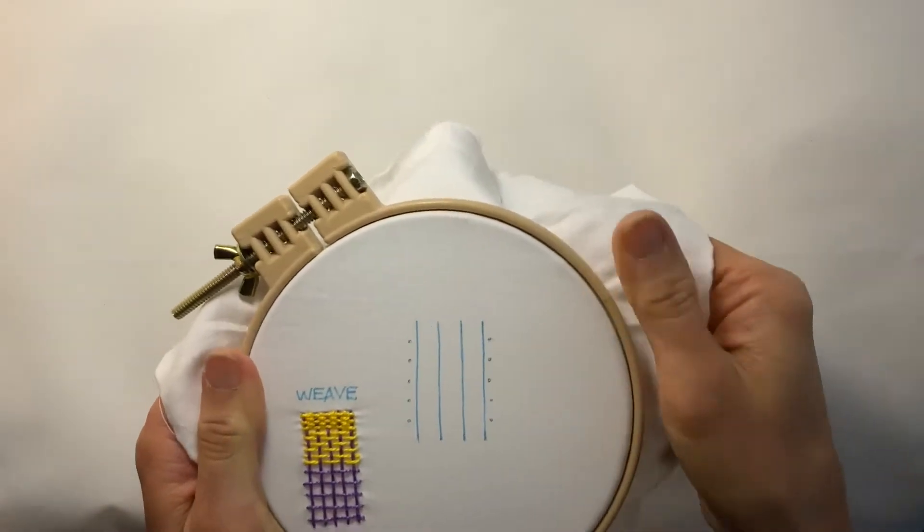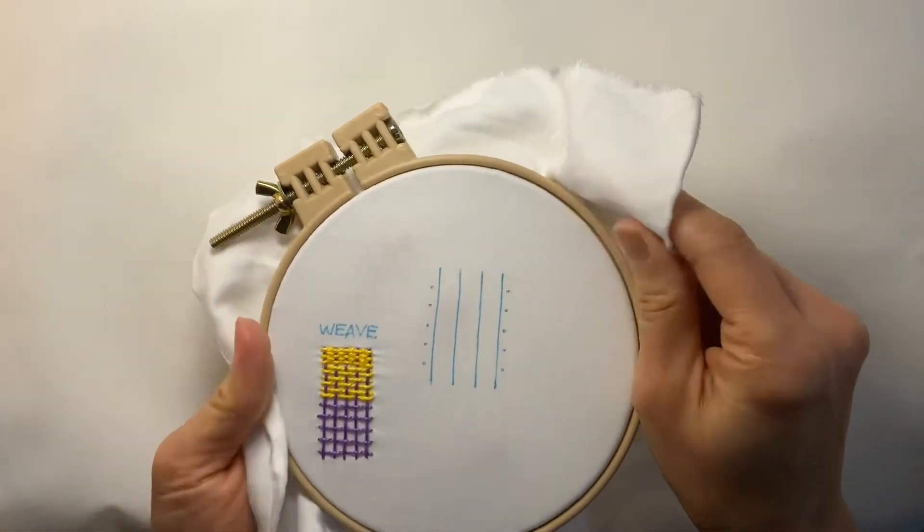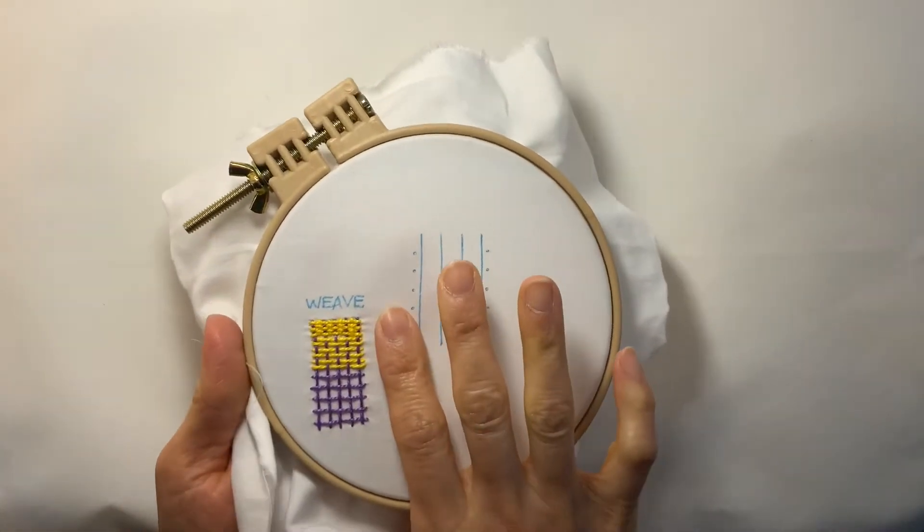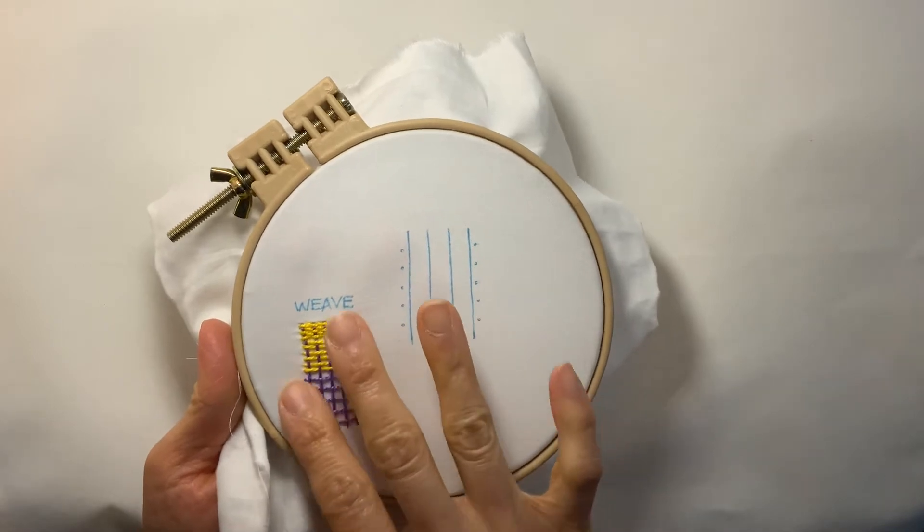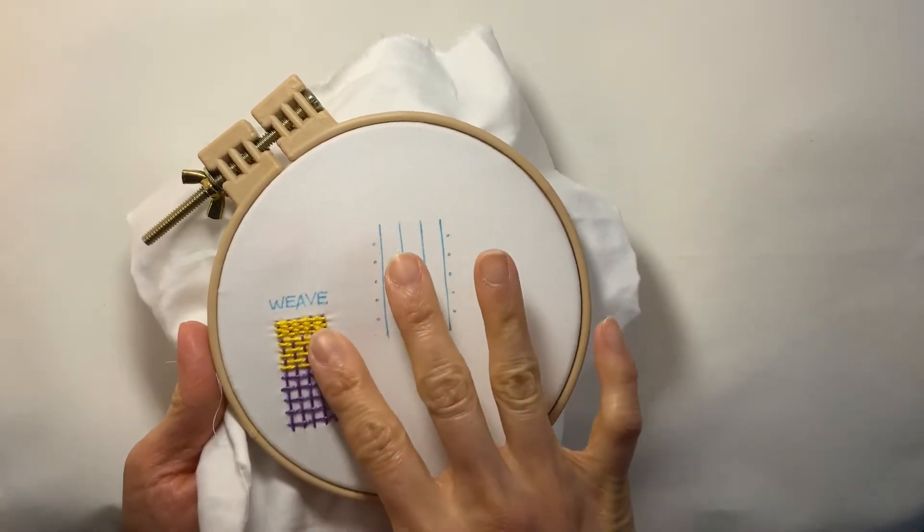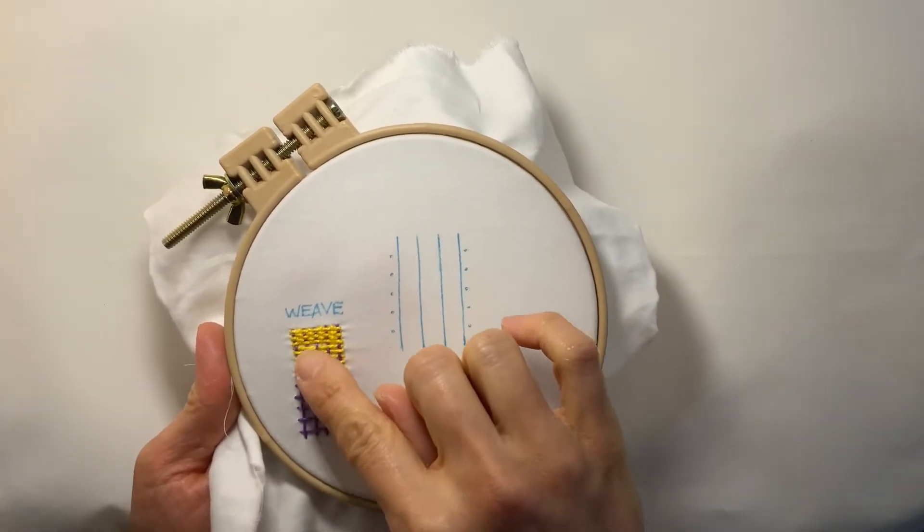Hello there! This is Bonnie and I'll be showing you the weave stitch today. It's a great stitch to add lots of texture to your embroidery. You can see it kind of looks like a basket too.